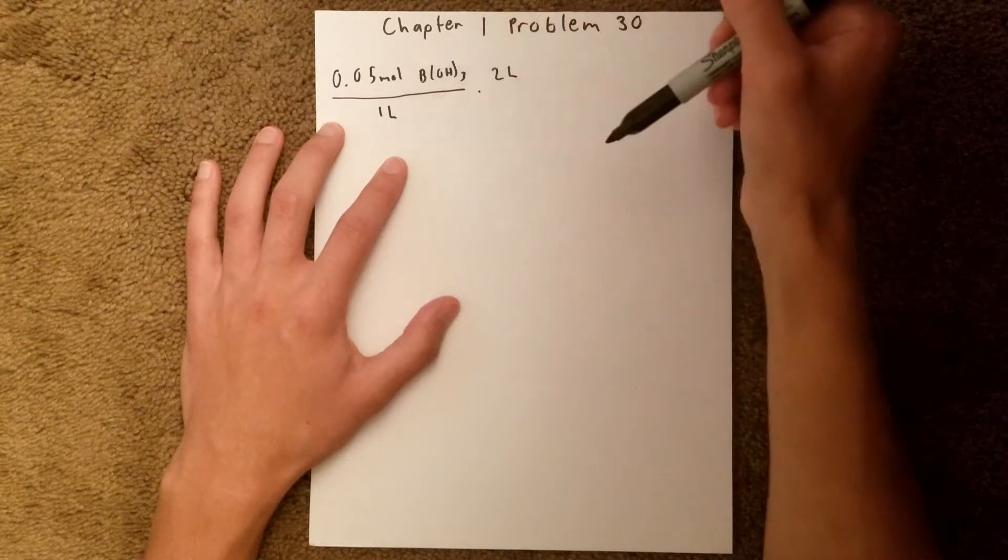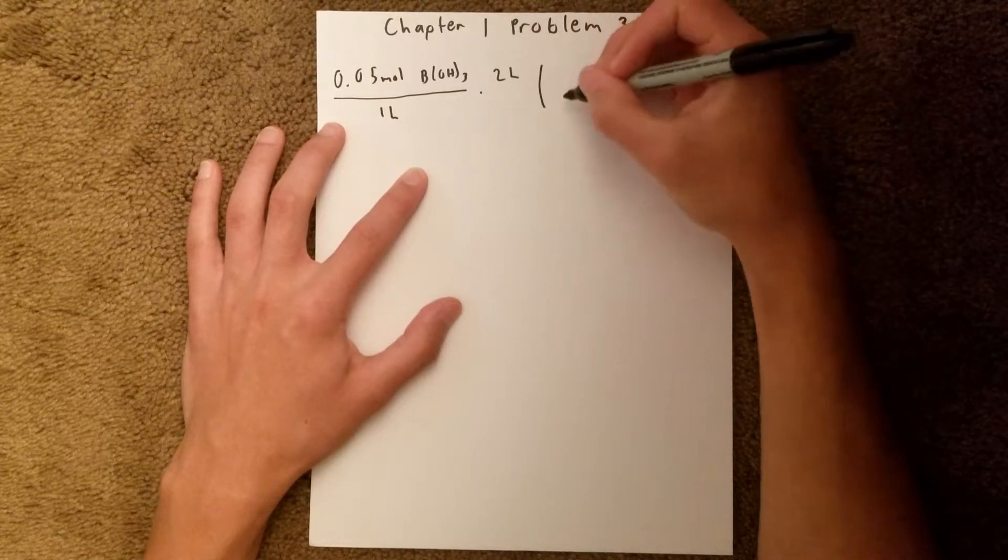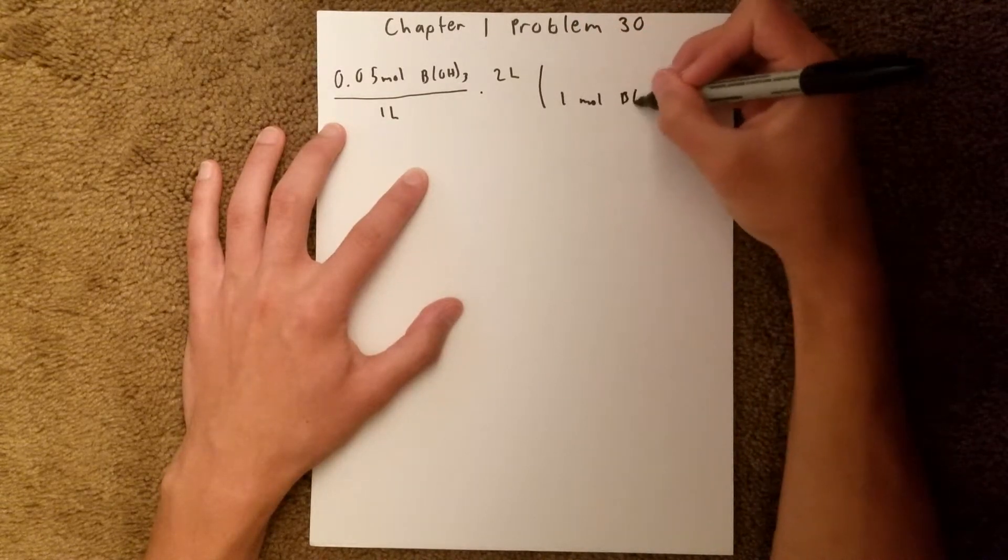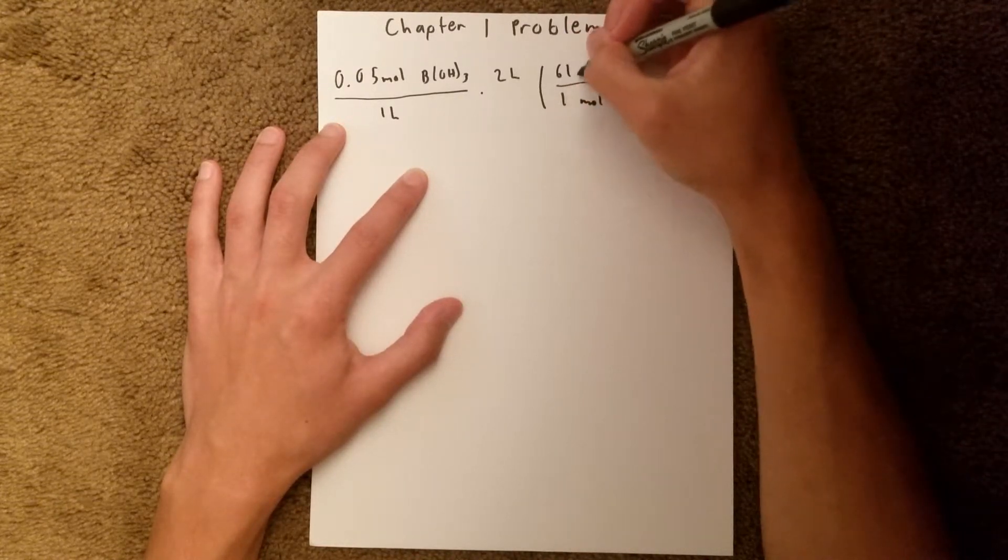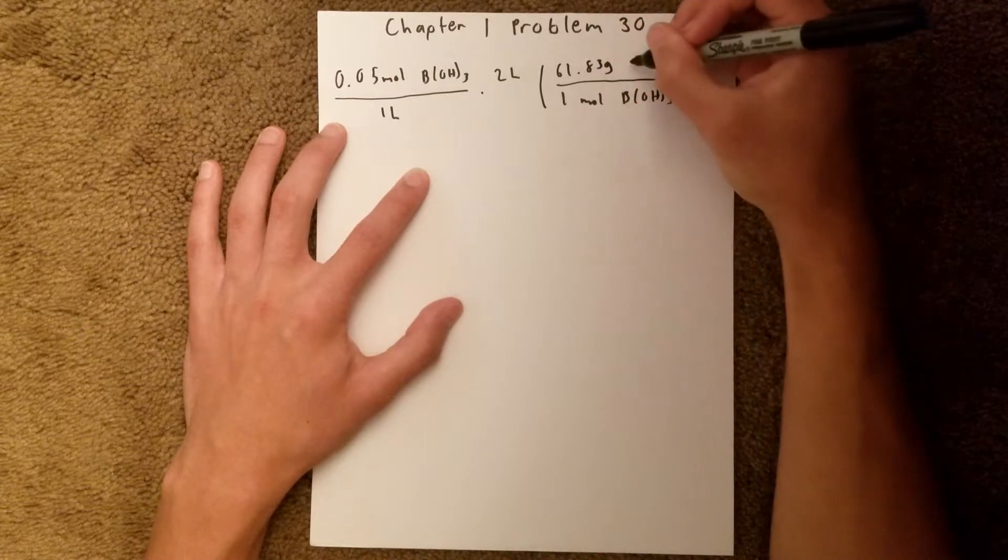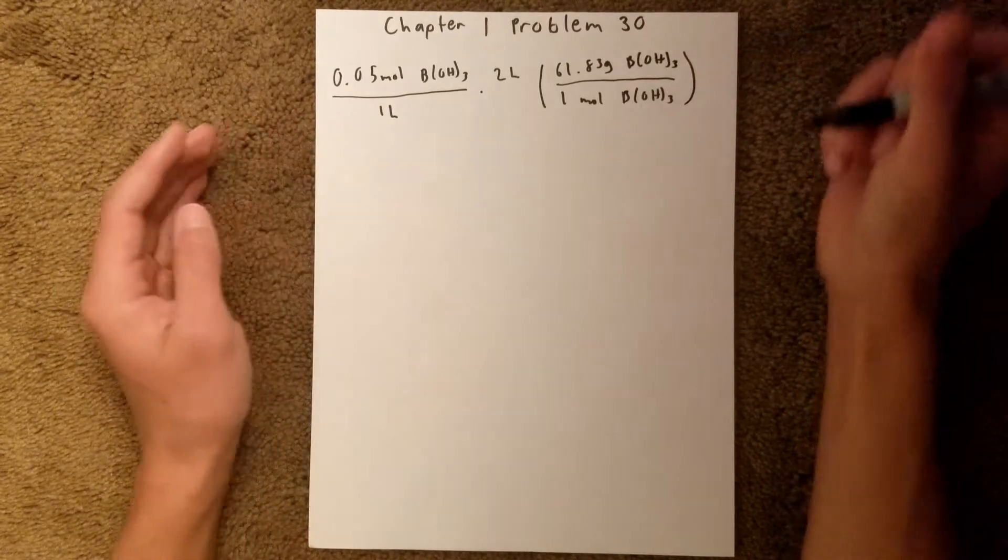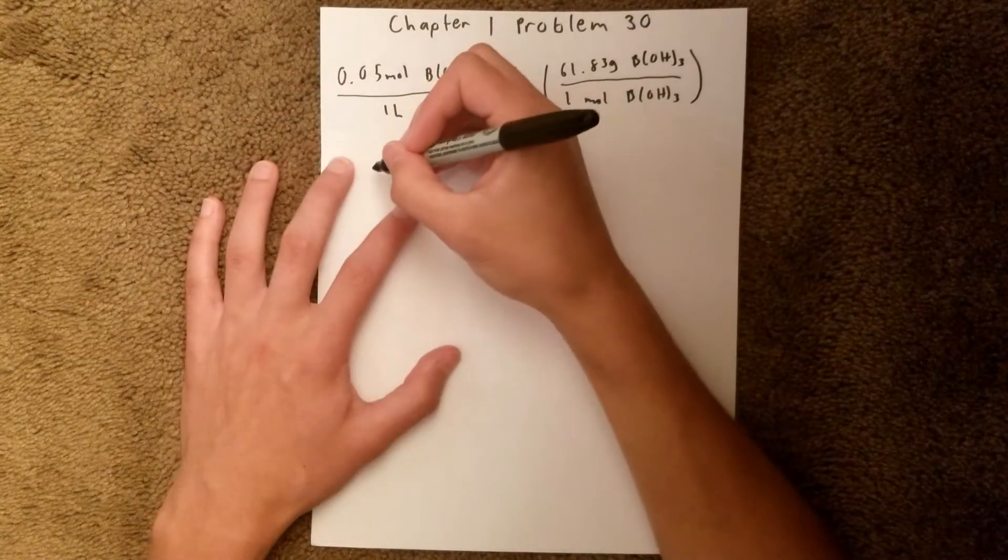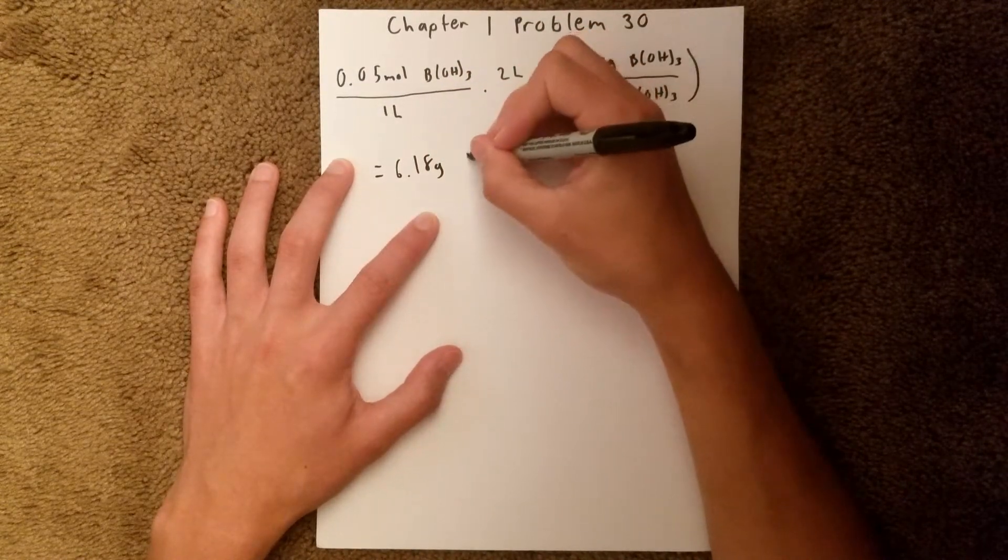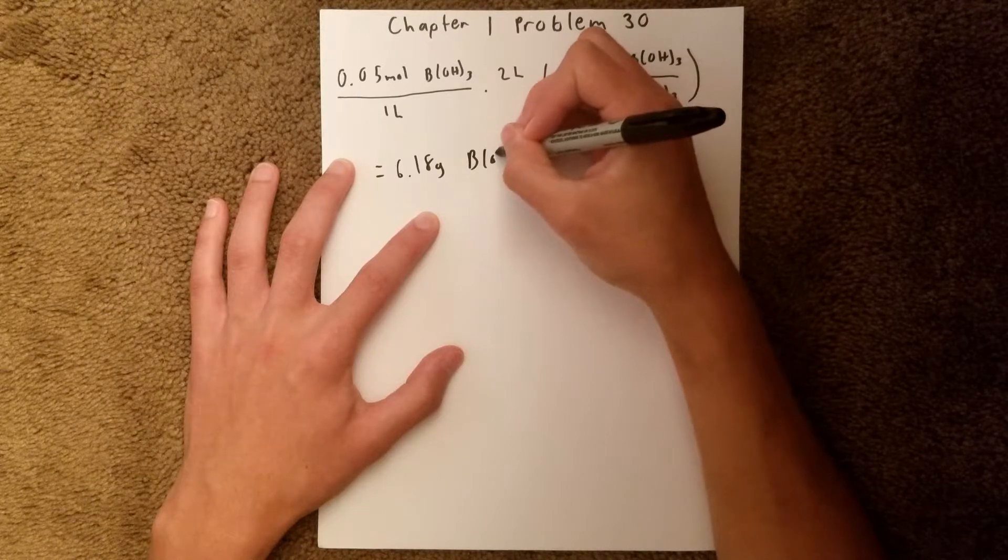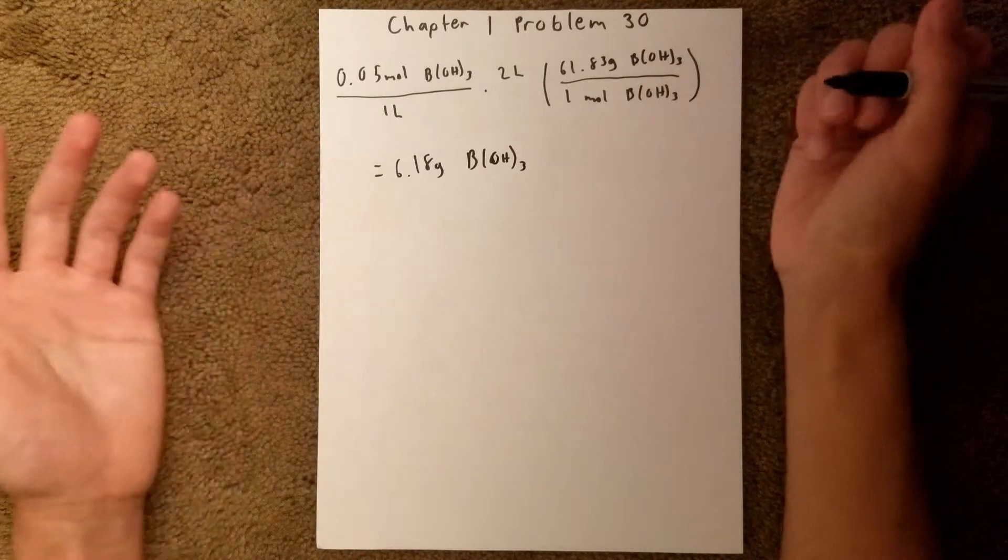And to convert moles to grams, we need the molar mass of boric acid, which we can multiply. We have 1 mole of BOH3 is 61.83 grams of BOH3. And so when you plug all that into your calculator, you should get 6.18 grams of boric acid to make that solution.